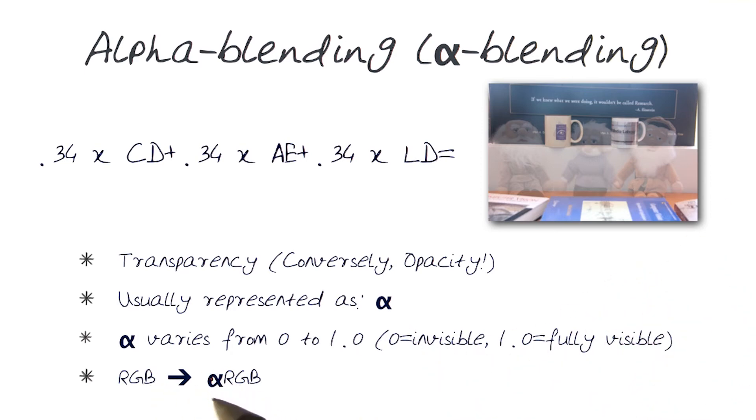In essence, one of the ways we could do this is add another layer. RGB are the three layers of the image, or three channels. Alpha could be another channel with values from 0 to 1, while RGB would have intensity values from 0 to 255.